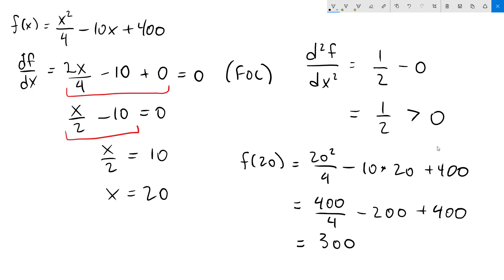And that's all there is to it. We have taken the first order condition of our function, found our extreme point of 20, and then determined that it was a minimum as opposed to a maximum. And then we found the value of the function at that point. If you have any questions, please let me know. Thanks for watching.